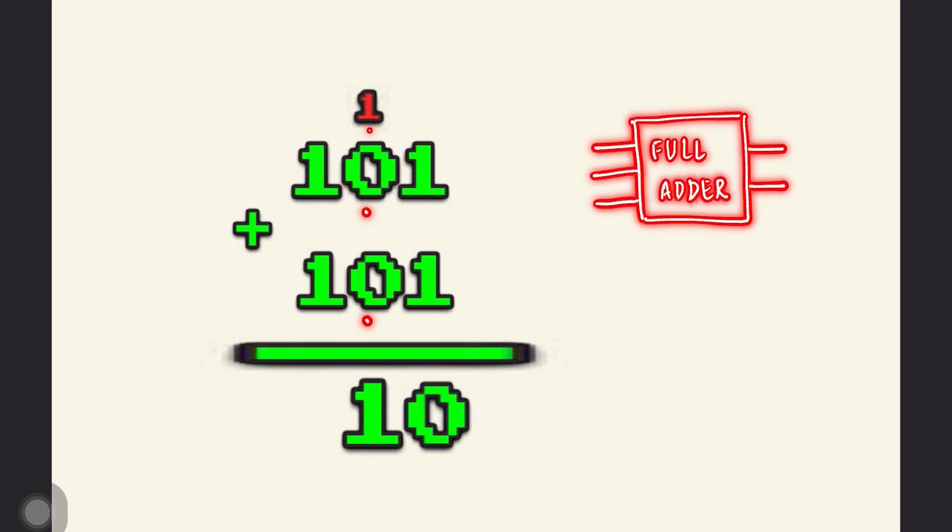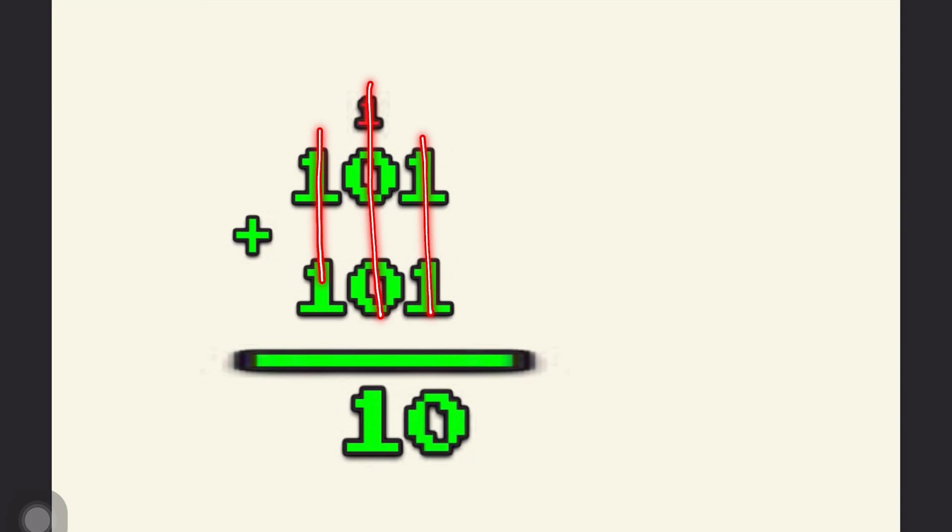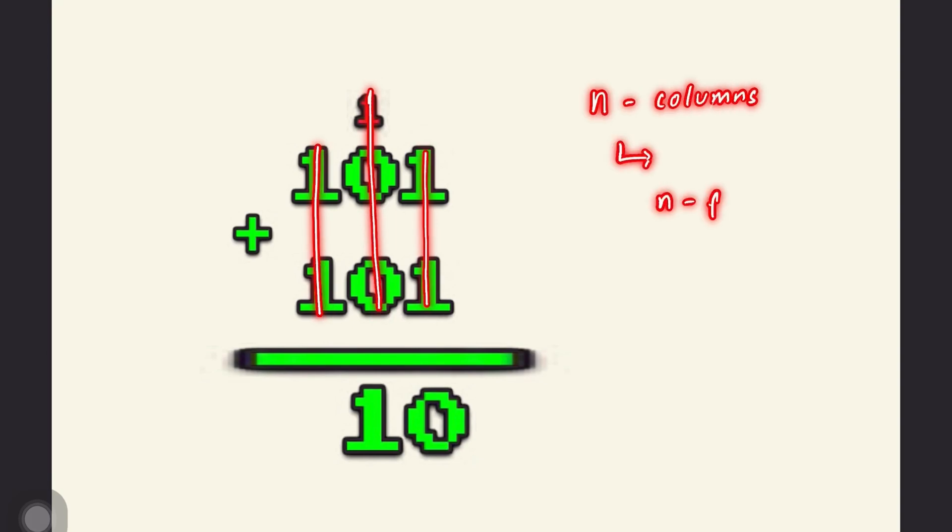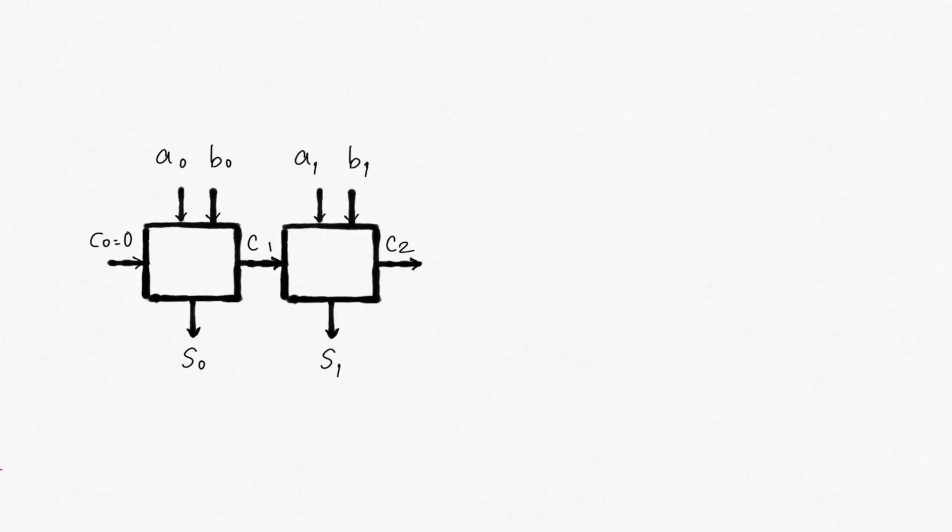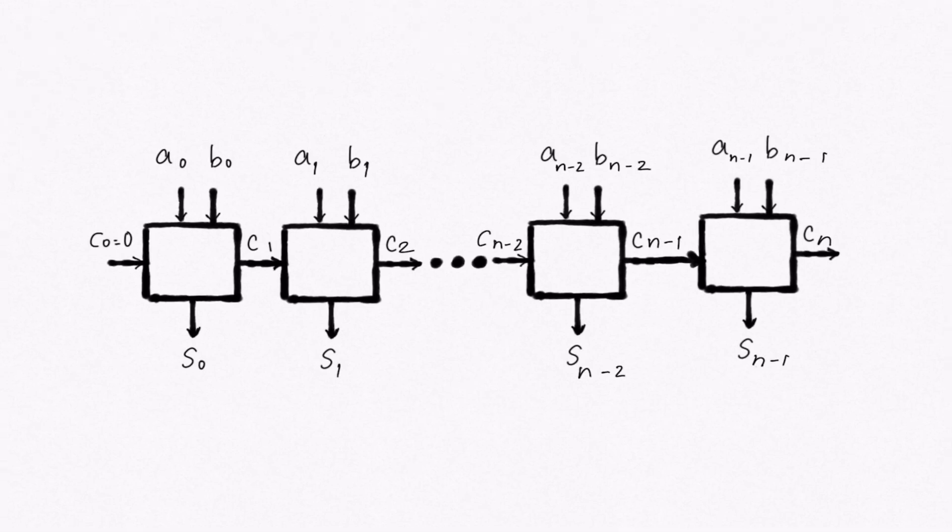A full adder takes three bits as inputs and outputs two bits. A full adder can deal with one column of addition. But in arithmetic operations, we need to perform operations on multiple columns. For performing such arithmetic operations, we use a parallel adder. A parallel adder to add n bits is made by combining n full adders. A parallel adder essentially is a cascade of full adders.